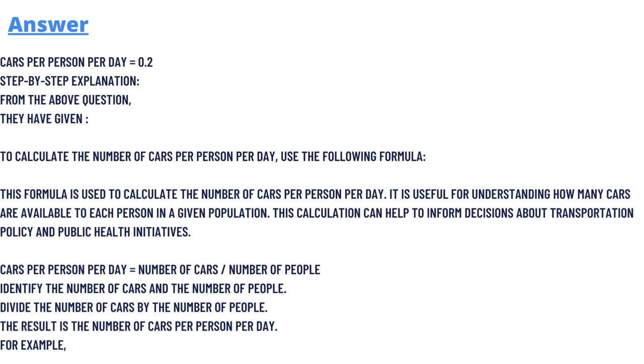The formula which we will be using is: cars per person per day equals number of cars divided by number of people. We have to identify the number of cars and number of people, then divide the number of cars by the number of people.